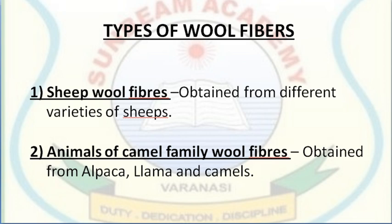There are different types of wool fibers based on the animals from which they are obtained. The first common wool fiber is sheep wool. In our country, different breeds of sheep are reared in different parts — common breeds include Lohi, Nalli, Bhakarwal, Marwadi and Patanwadi. These breeds provide different qualities of wool.